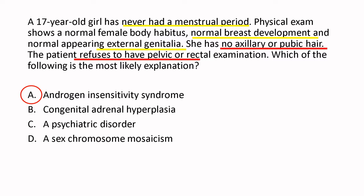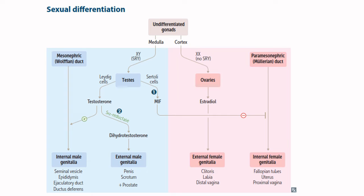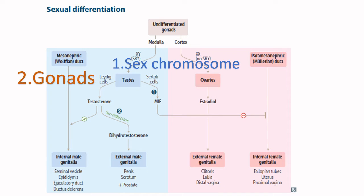The presentation of androgen insensitivity syndrome will come as a girl with primary amenorrhea — it will not come as a male, and that's the confusing thing about it. The key to recognizing questions like this is to understand sexual differentiation. You need to separate chromosomes from gonads from genitalia. The sex chromosomes determine the gonads — a person with androgen insensitivity syndrome has a Y chromosome, so they will have testes.